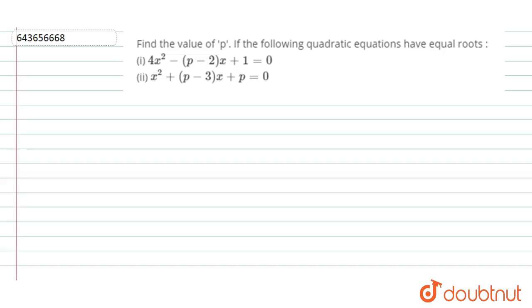The question says: find the value of p for the following quadratic equations which have equal roots. The key catch here is understanding what it means when the roots are equal.